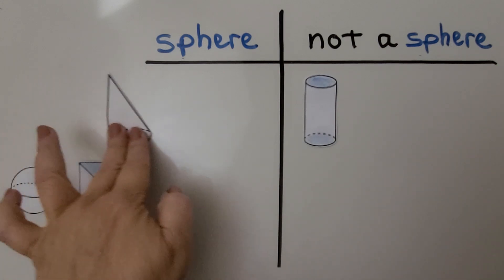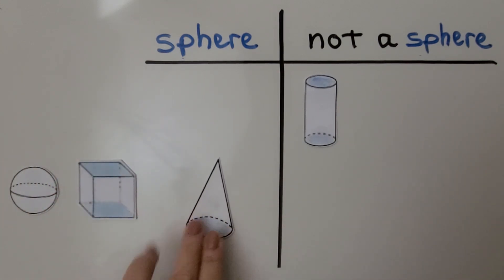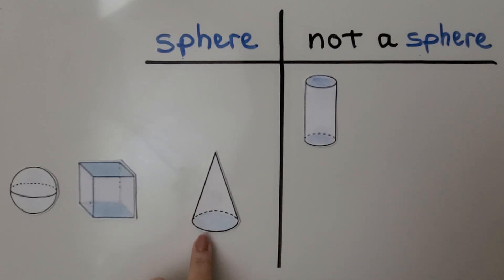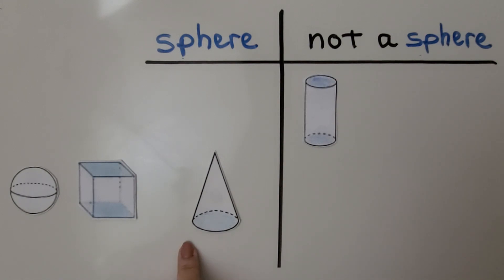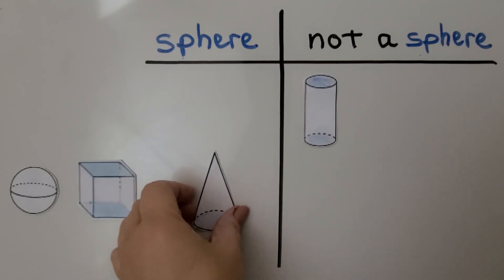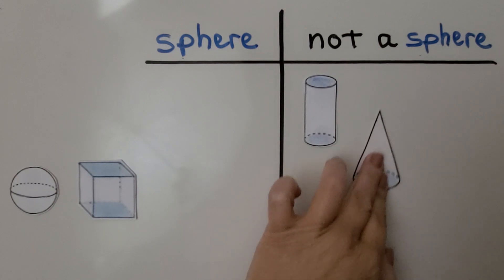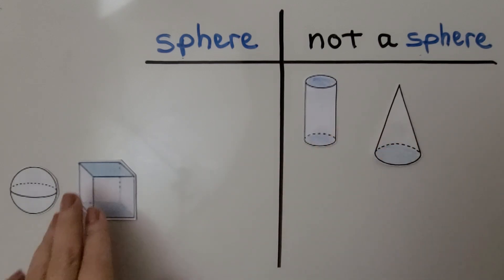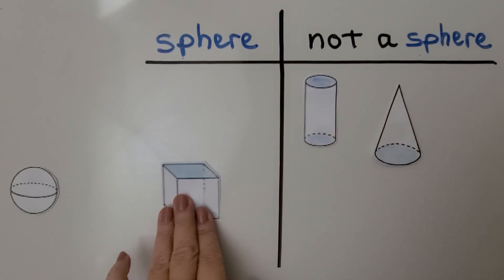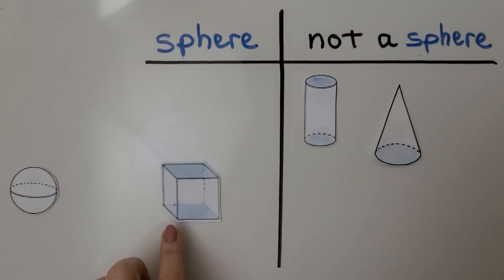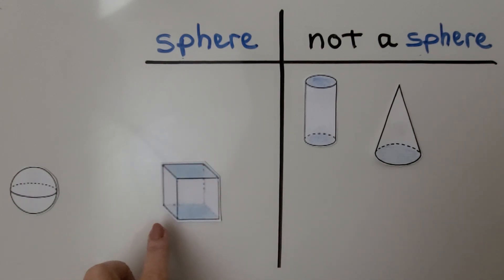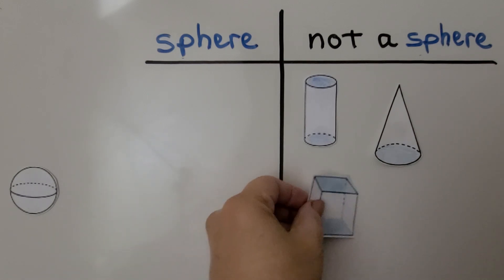Is this a sphere? Do you know what this is? This is a cone. It has one flat surface, and spheres don't have flat surfaces, so that's not a sphere. Is this a sphere? No, this is a cube with six flat surfaces, and spheres don't have flat surfaces. That's a cube — it's not a sphere.